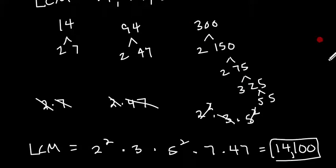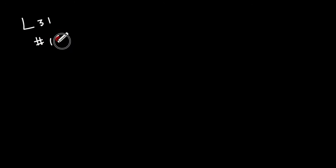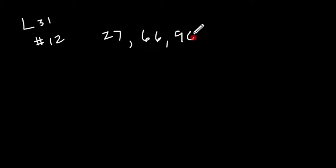So let's try another one. This is actually number 12 from lesson 31 — you didn't have to do this one, but I'll use it as an example. We have the numbers 27, 66, and 90, and we want to find the least common multiple.